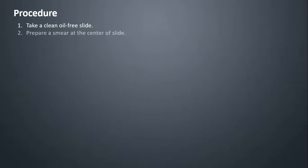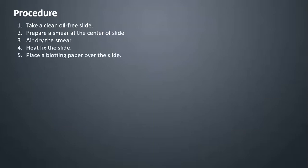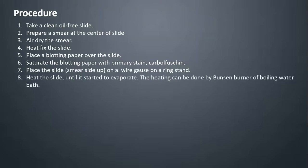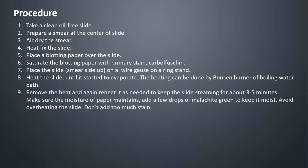Dorner's Method Procedure: Step 1, take a clean oil-free slide. Step 2, prepare a smear at the center of the slide. Step 3, air dry the smear. Step 4, heat fix the slide. Step 5, place a blotting paper over the slide. Step 6, saturate the blotting paper with the primary stain, carbol fuchsin. Step 7, place the slide, smear side up, on a wire gauze on a ring stand. Step 8, heat the slide until it starts to evaporate — heating can be done by Bunsen burner or boiling water bath. Step 9, remove the heat and reheat as needed to keep the slide steaming for about 3–5 minutes. Make sure the moisture of the paper is maintained. Avoid overheating and don't add too much stain.